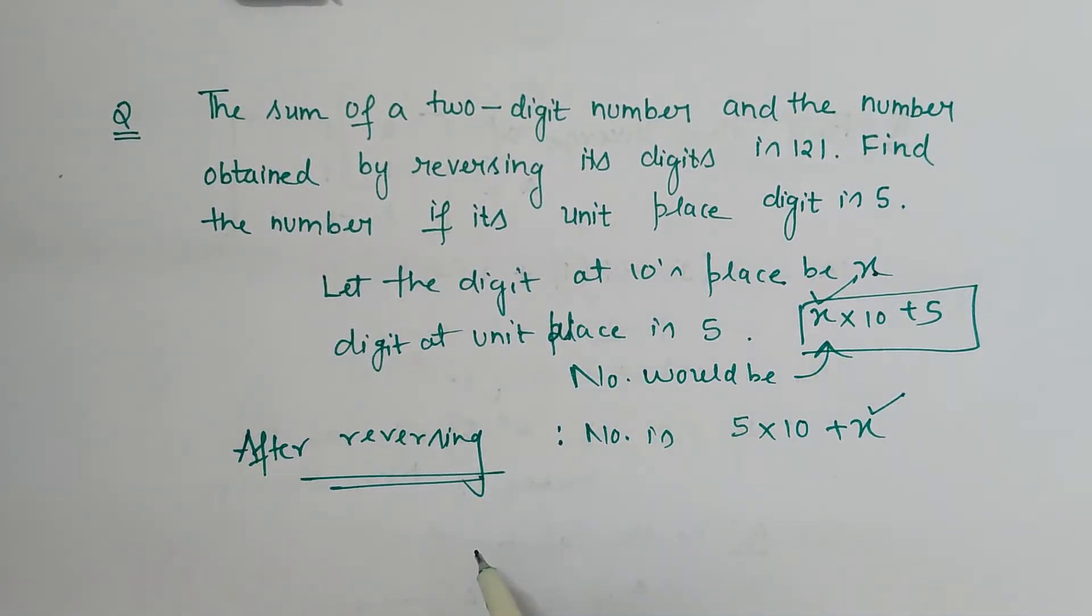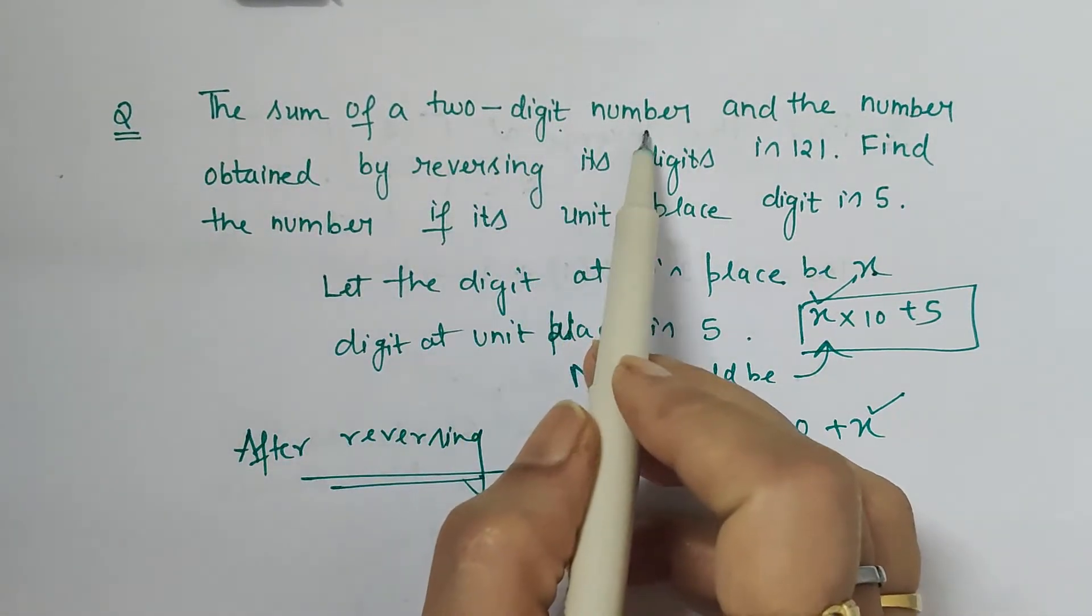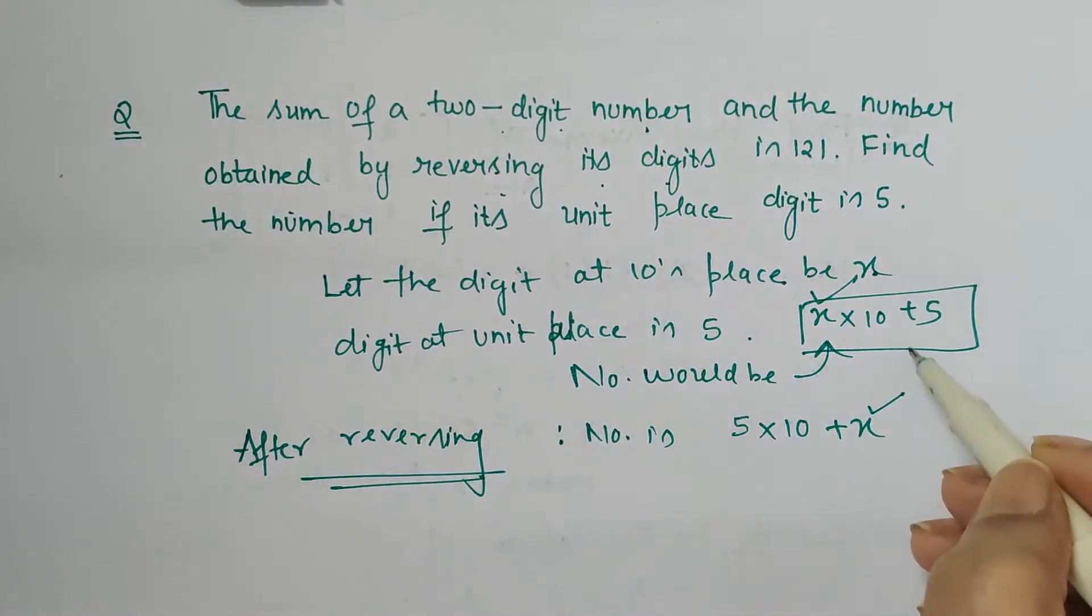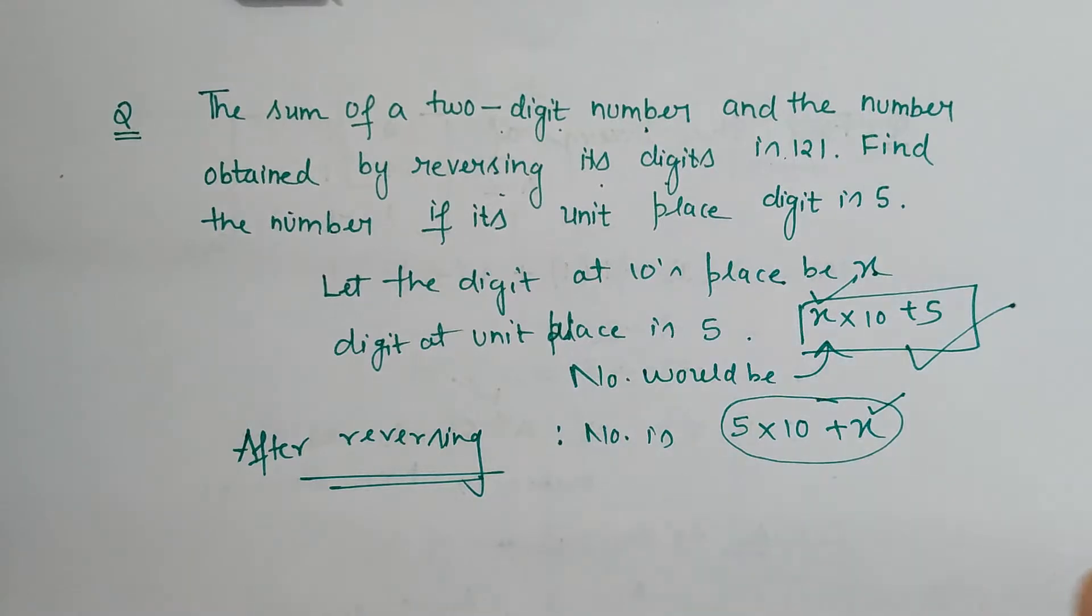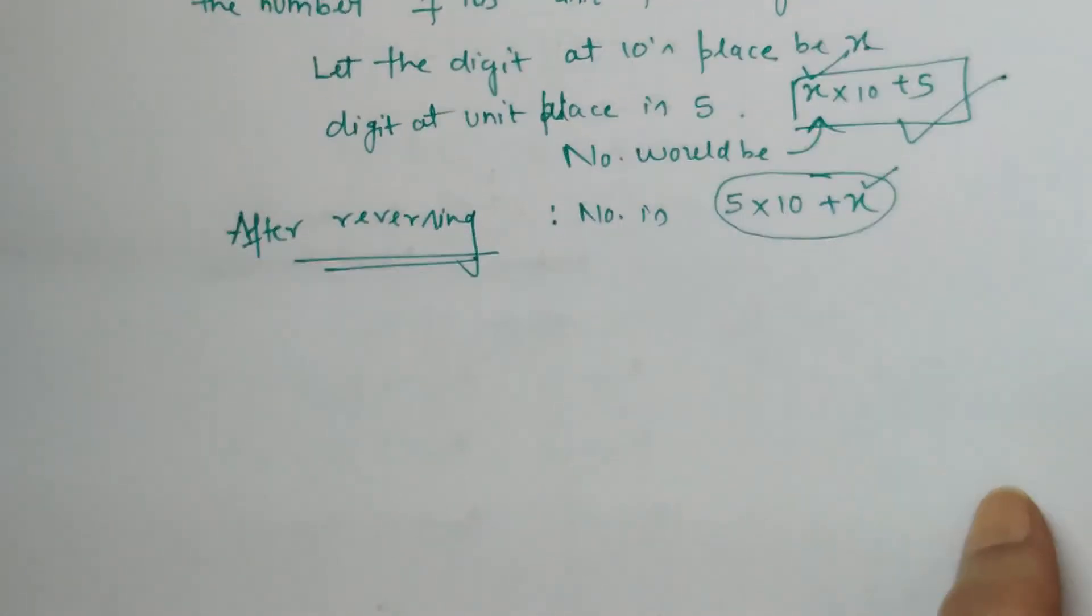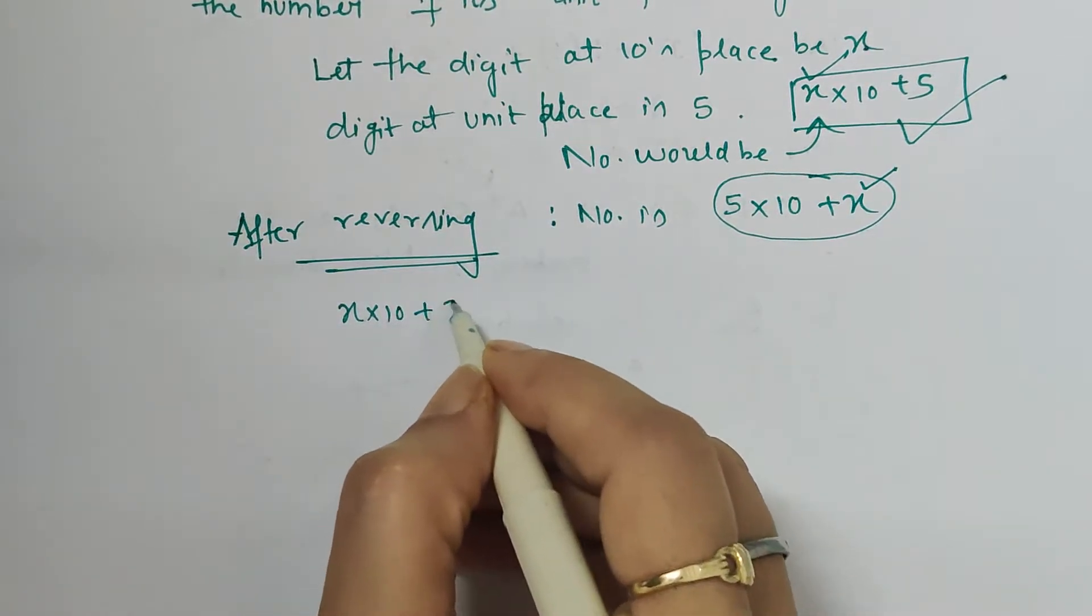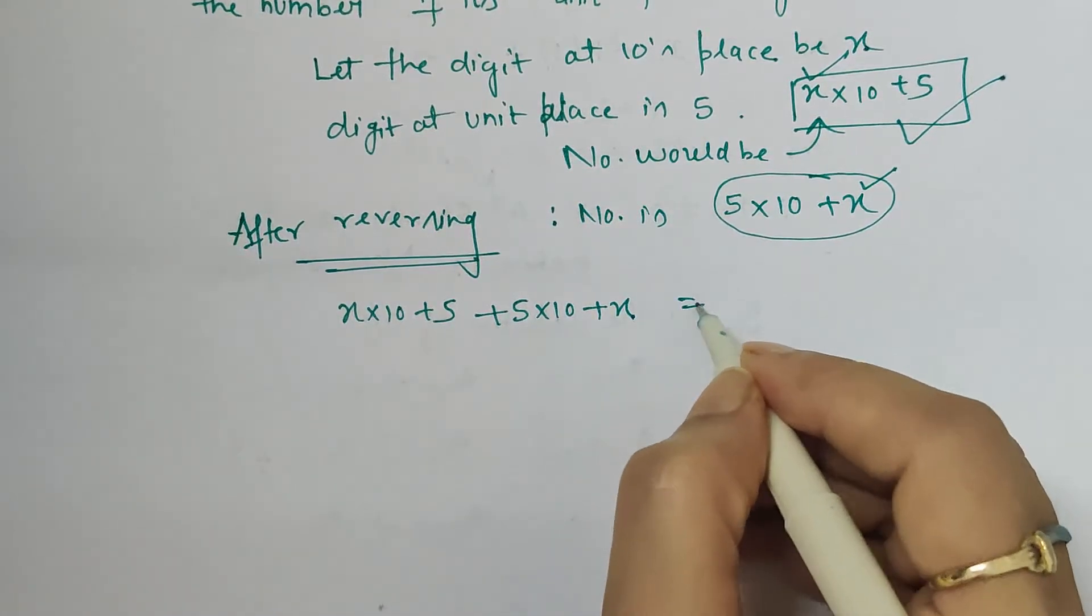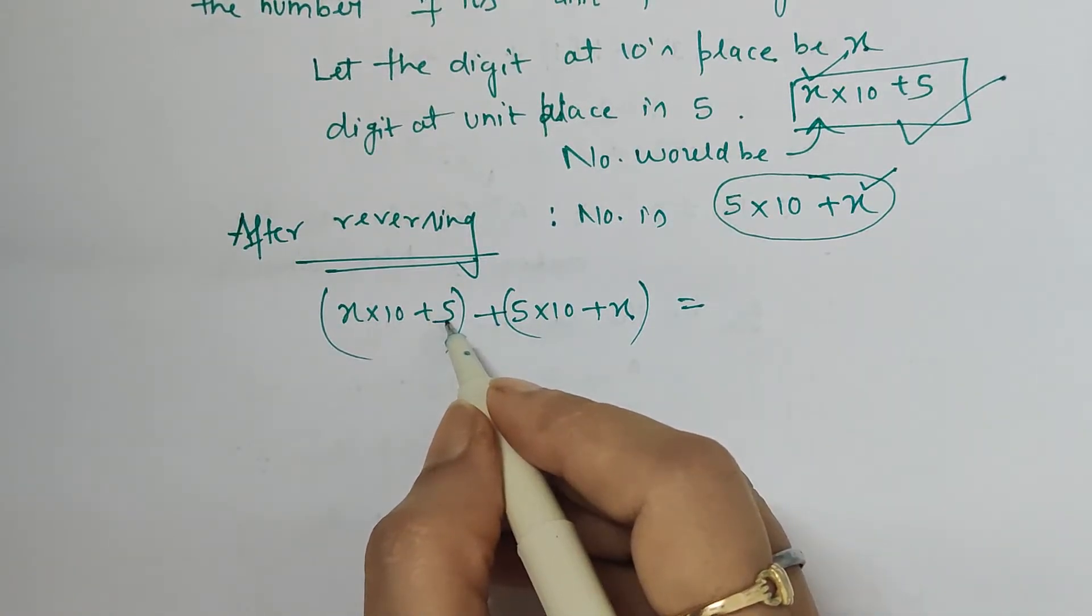Now what is the condition? The sum of a two-digit number and the number obtained by reversing its digit is 121. So this is the two-digit number and the number on reversing the digit is this, and addition of this is 121 given to us. So let us write it in equation form and solve for x. So x into 10 plus 5 plus 5 into 10 plus x is equal to 121.